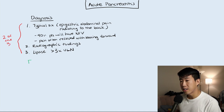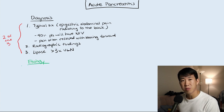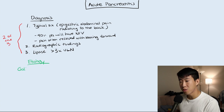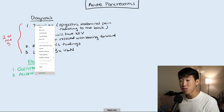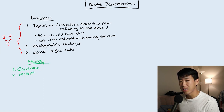The next thing to talk about is the etiology. Almost always there are two main etiologies: gallstone pancreatitis, and number two, alcohol, which is also very common but with a slightly lower incidence compared to gallstone pancreatitis.